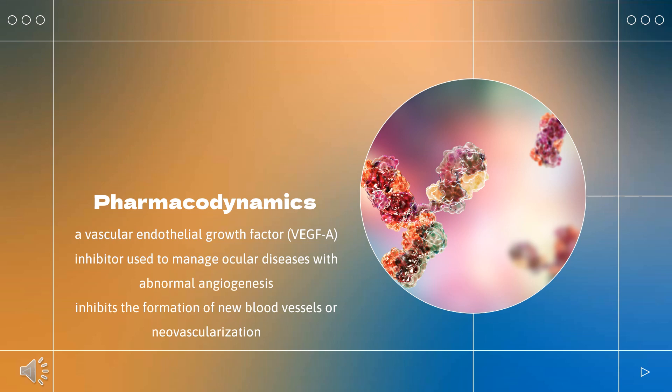Ranibizumab is a vascular endothelial growth factor (VEGF) inhibitor used to manage ocular diseases with abnormal angiogenesis. It inhibits the formation of new blood vessels, or neovascularization. Ultimately, Ranibizumab works to slow down the loss of vision and causes significant visual improvement in patients with ocular degenerative disorders, such as age-related macular degeneration. It can also reduce retinal thickness.